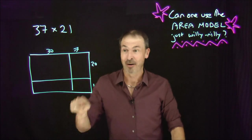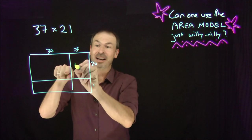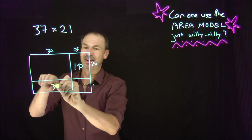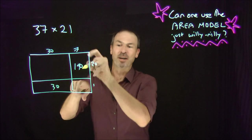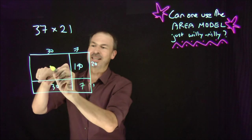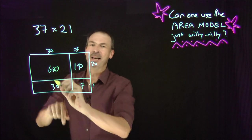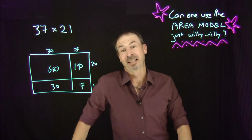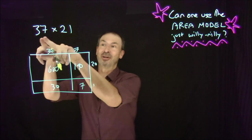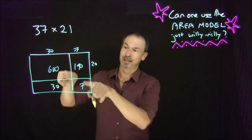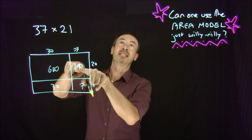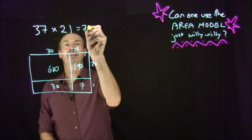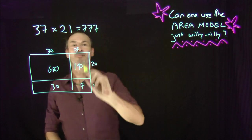I can work out each individual area: 7 times 20 is 140, 30 times 1 is 30, 1 times 7 is 7, and 20 times 30 is 600. Those individual areas are fine to work out. Now I can see the area of the whole rectangle: 37 times 21 must be 600 plus 140 is 740 plus 30 plus 7 — that's 777. Beautiful.